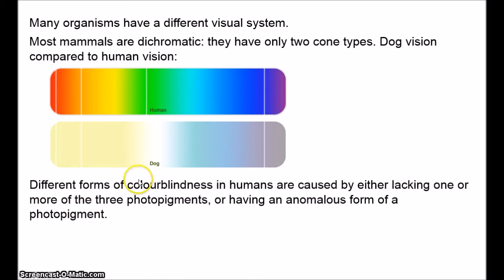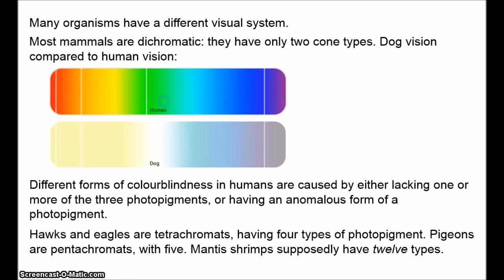More interestingly, there are animals with superior colour discrimination. Mammals in general actually have comparatively poor colour vision — a result of our ancestors living in caves where good eyesight was less useful. Birds tend to have better eyes and can see more colours. Hawks are tetrachromats with four photopigments, one in the ultraviolet part of the spectrum. There's evidence that pigeons are pentachromats with five photopigments. Mantis shrimps supposedly have 12 types — they potentially see colours beyond anything we can imagine.